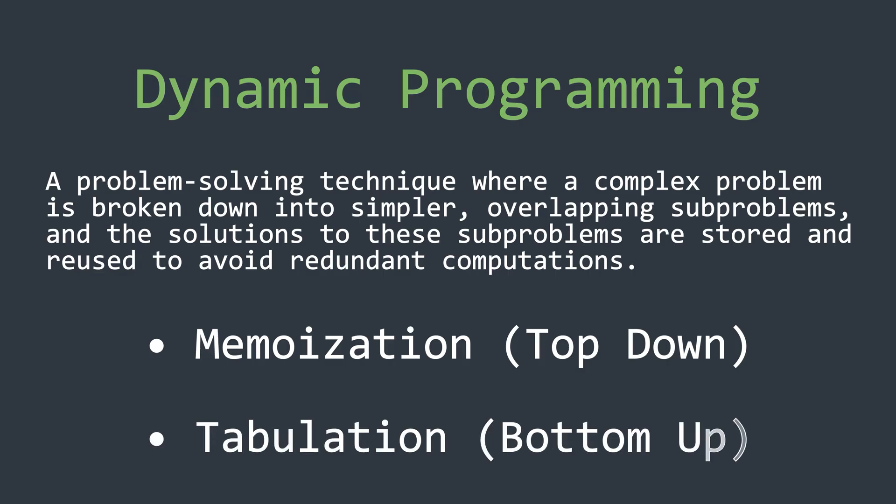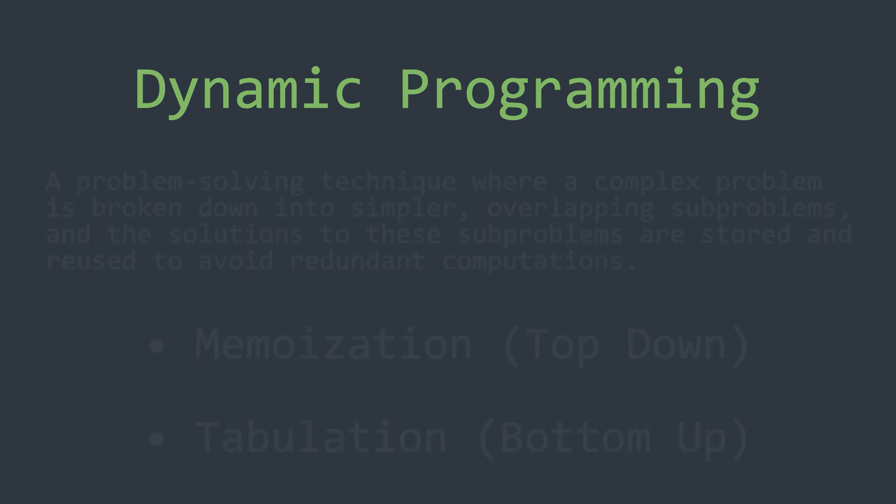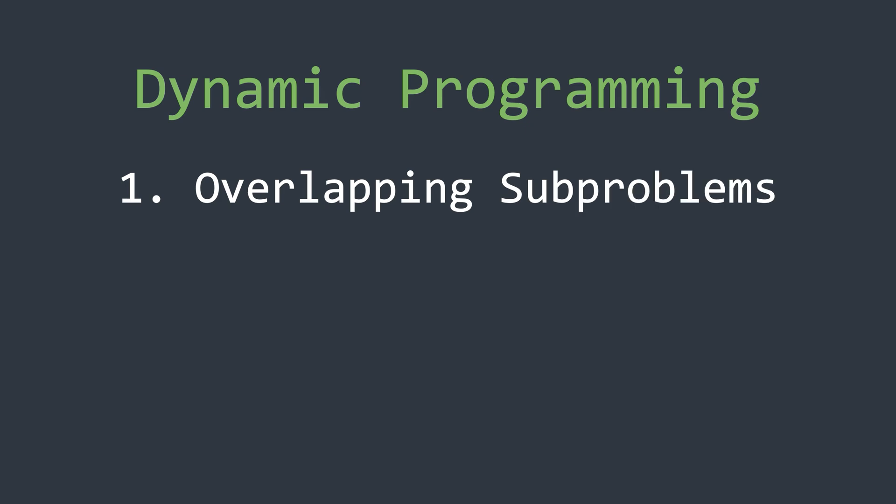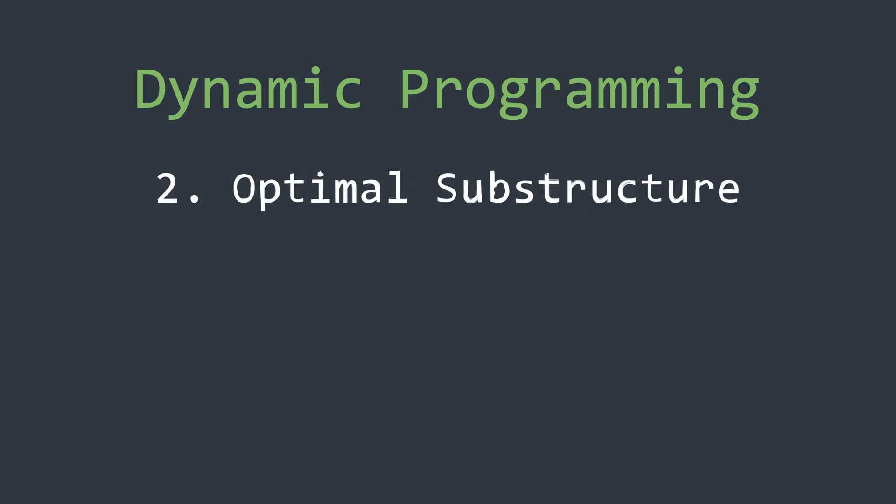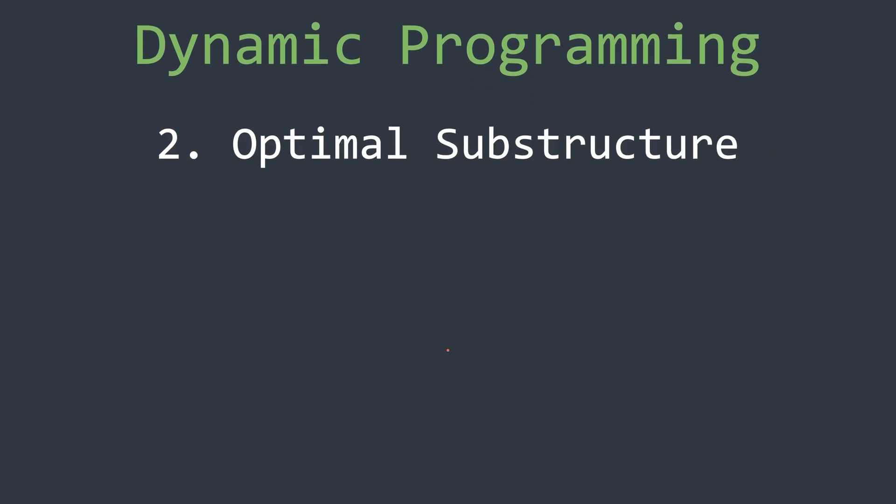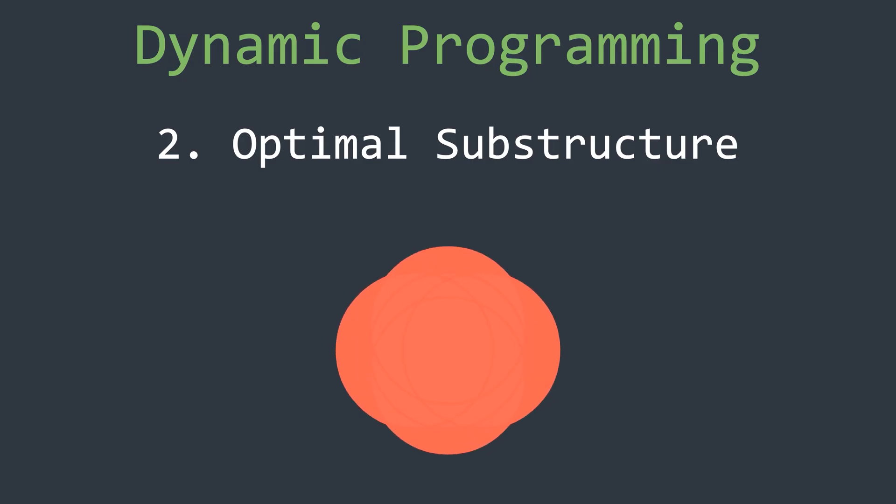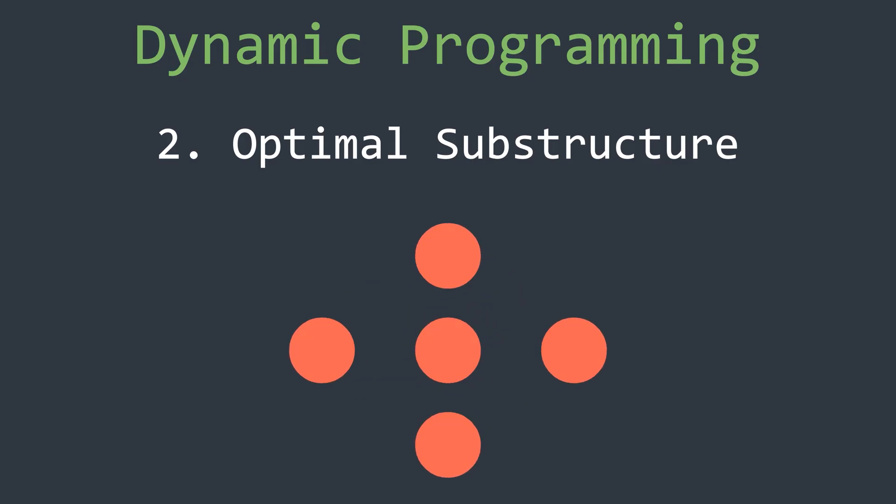And the other is tabulation, a bottom-up approach that uses iteration. Now, for dynamic programming to be applicable, a problem must satisfy two conditions. One is overlapping sub-problems which we have already seen. And the other is called optimal sub-structure meaning the problem can be divided into sub-problems solved independently and then combined to form the final solution.